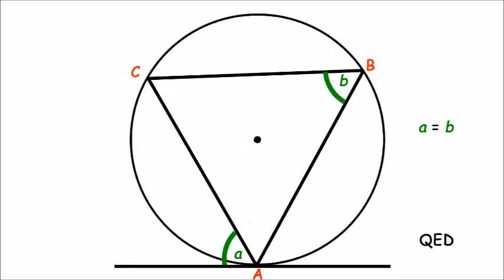And so we have therefore proven that the angle between a tangent and a chord is equal to the angle subtended by the chord in the alternate segment.